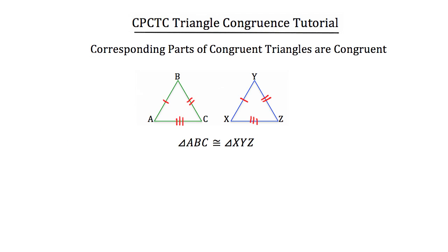So now that we know that, what does that mean for us? Well we also know that corresponding parts of congruent triangles are congruent. So let's look at it this way. Angle A in triangle ABC corresponds to angle X in triangle XYZ.